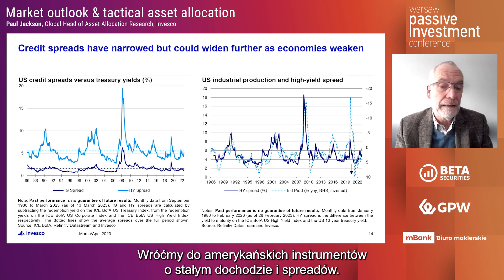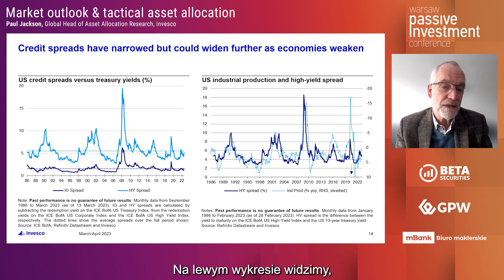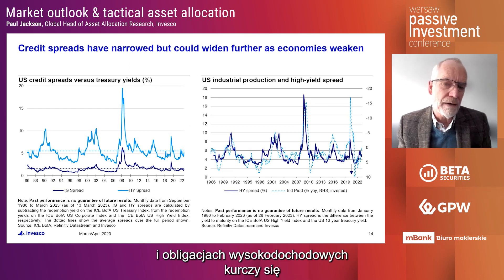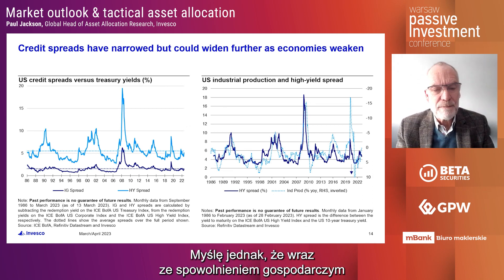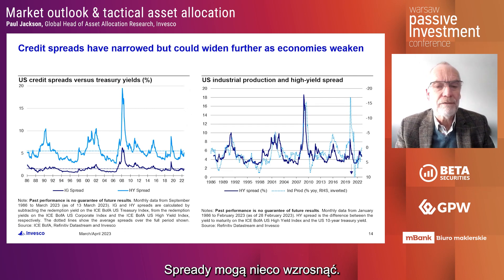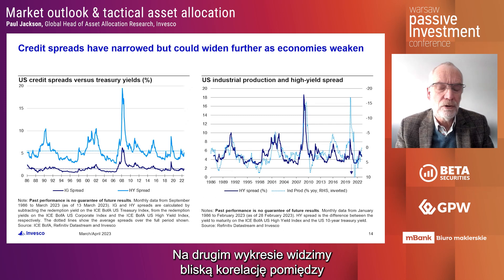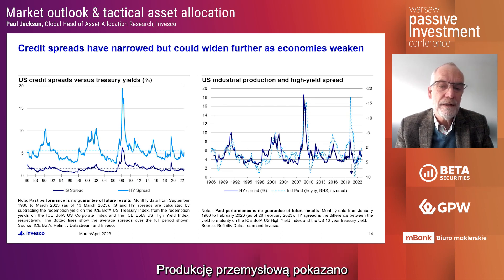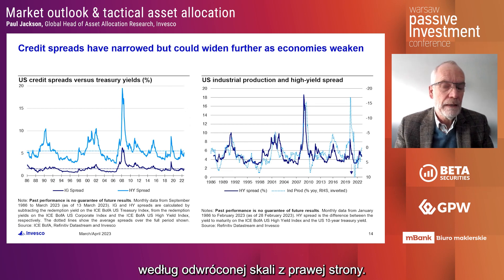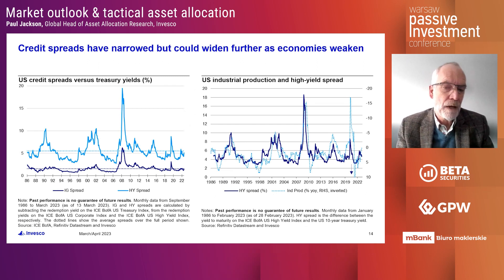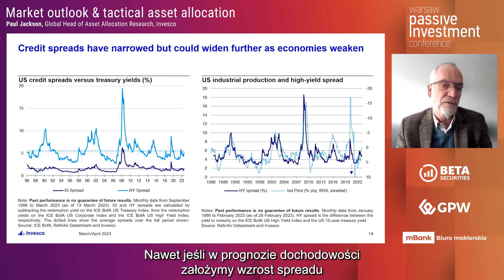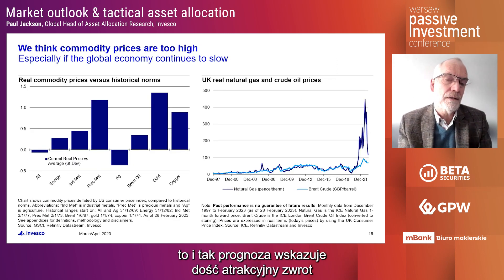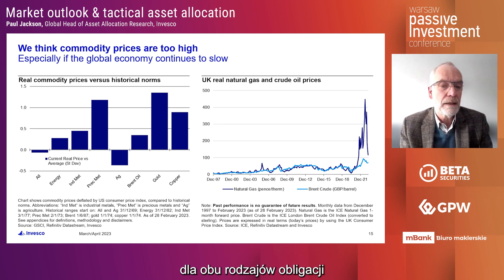Coming back to fixed income and looking at credit spreads, we can see both investment grade and high yield spreads in the US. These spreads have narrowed since around October of last year, but I suspect that as economies slow there might be some widening. Typically when the economy is weakening, spreads tend to widen. But even when I allow for credit spreads to widen, I still get a relatively attractive set of return projections for investment grade and high yield credit around the world.